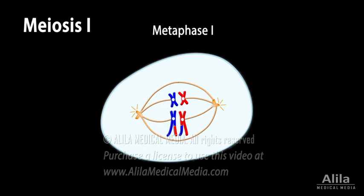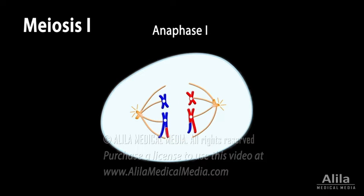In metaphase 1, the homologous pairs of chromosomes align on either side of the equatorial plane of the cell, with their centromeres attached to spindle fibers. In anaphase 1, the spindle fibers pull the homologous chromosomes apart toward each pole of the cell. Note: what happens here is the separation of homologous chromosomes and not sister chromatids. This leads to the reduction in chromosome number in daughter cells from diploid to haploid.